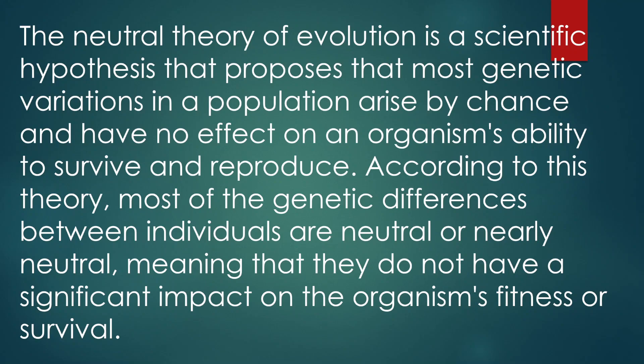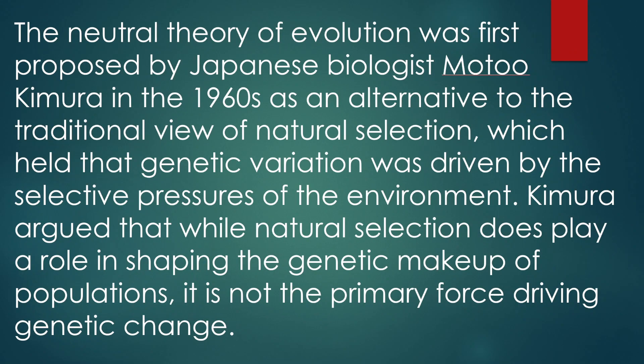The neutral theory of evolution is a scientific hypothesis that proposes that most genetic variations in a population arise by chance and have no effect on an organism's ability to survive and reproduce. According to this theory, most of the genetic differences between individuals are neutral or nearly neutral, meaning they do not have a significant impact on the organism's fitness or survival.